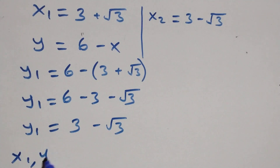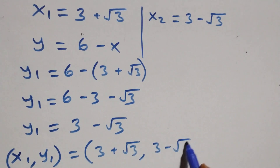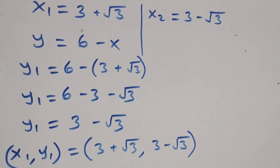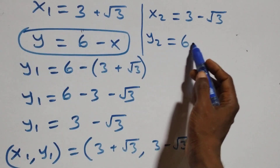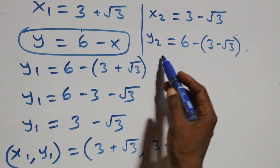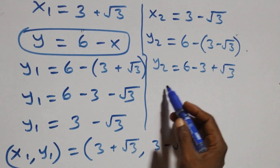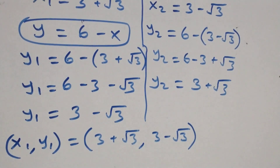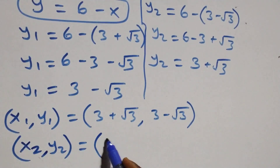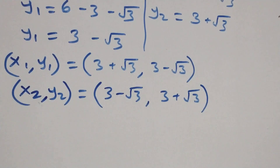The first set of solutions is (x₁, y₁) = (three plus root three, three minus root three). For the second value, y₂ equals six minus x₂ equals six minus (three minus root three), giving y₂ equals three plus root three. So the second set of solutions is (x₂, y₂) = (three minus root three, three plus root three).